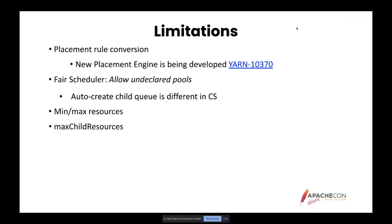Another limitation is FAIR Scheduler's AllowUndeclaredPools configuration entry. If this is true, the placement engine creates a new queue during application submission based on the submitter's request, or based on the submitter's username if the user's default property is true. Capacity Scheduler has something similar under AutoCreateChildQueue, but it requires the parent to be managed and cannot have any statically created queues. The min and max resources and max child resources are simply more flexible in FAIR Scheduler. In Capacity Scheduler, capacity and max capacity could be similar, but either everything is absolute or everything is relative. In FAIR Scheduler, these can be mixed, and separate limits can be provided for memory and CPU even in relative mode, which is currently not possible in Capacity Scheduler.